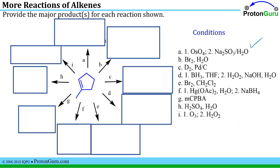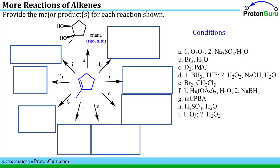Finally, we need to look at all these reaction conditions and figure out what the major products should be, one reaction at a time. When you see osmium, you should think you're going to add an OH to each of the two carbons—that is a reaction that undergoes syn addition. You'll have generated two stereocenters, so when you draw your product make sure your two OHs are syn to each other, and indicate that it's a racemic mixture.